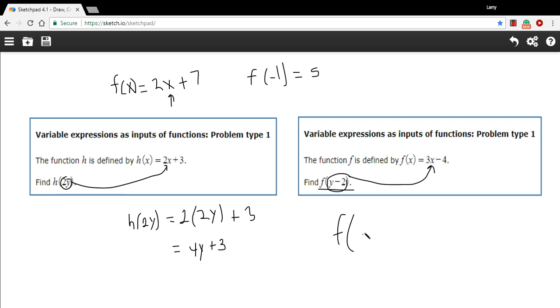So f of y minus 2 equals 3. And then I'm going to use parentheses again and put in the y minus 2 in place of x. And then minus 4. Now, in this case, we need to distribute the 3 here. So we'll multiply that through.